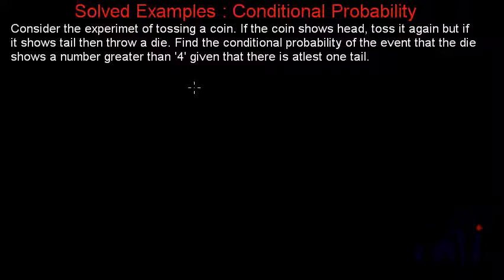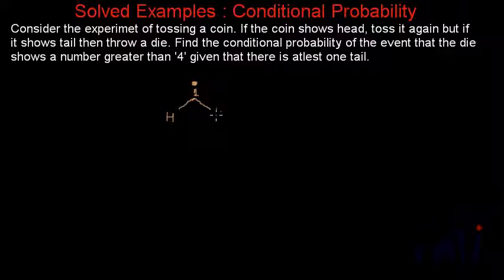First we are tossing a coin. In this problem, I am going to use the tree method of finding the probability because that is very convenient here. So if I start from this point, the total probability is 1. And if I toss a coin, I can get either a head or a tail. The probability of getting a head will be 1/2, and the probability of getting a tail will also be 1/2.